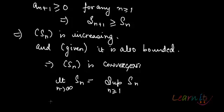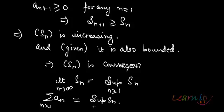That means the sum of the series AN is essentially the supremum of SN for all N. So essentially, in a series where the terms are non-negative, convergence of the series is equivalent to saying that the sequence of partial sums will be bounded.